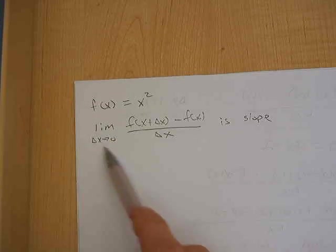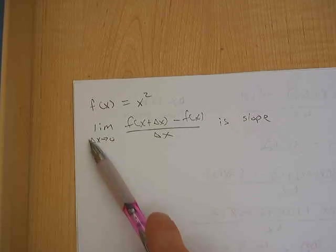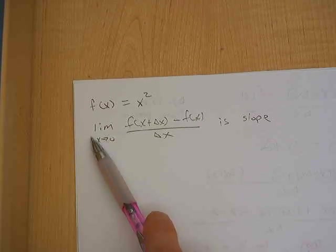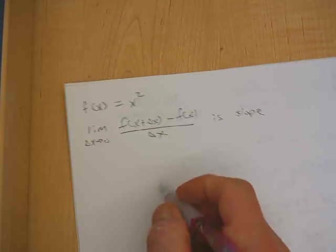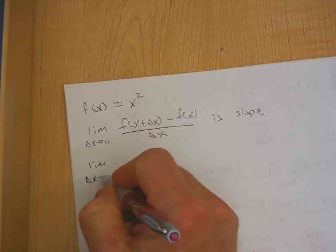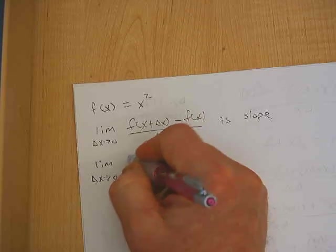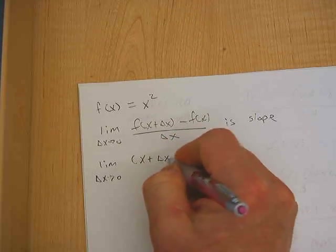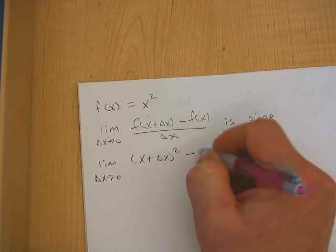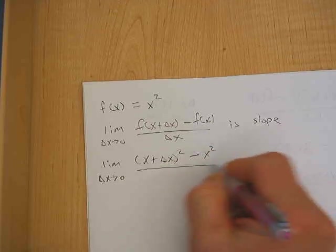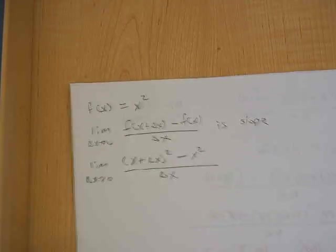And this is the general equation for the slope of the tangent line. So my function x squared, my limit as delta x approaches zero of x plus delta x squared minus x squared all over delta x.